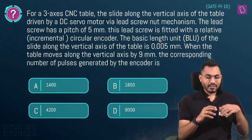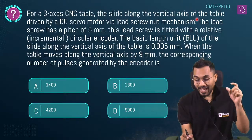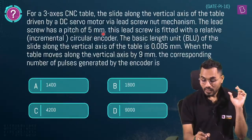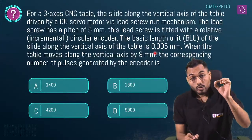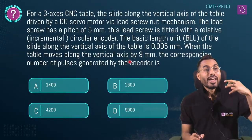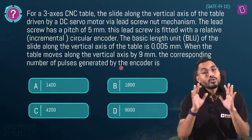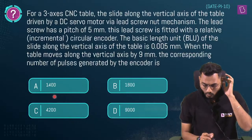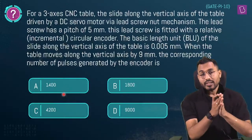Next question — for a three-axis CNC table: the slide along the vertical axis is driven by a DC servo motor via a lead screw-nut mechanism with a pitch of 5 mm. The lead screw is fitted with a rotary circular encoder. The BLU is 0.005 mm. When the table moves along the vertical axis by 9 mm, how many pulses are generated by the encoder?